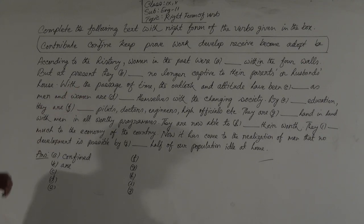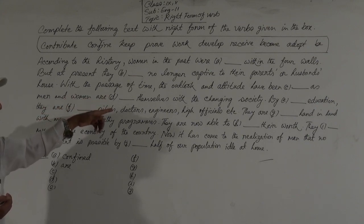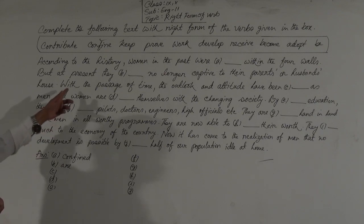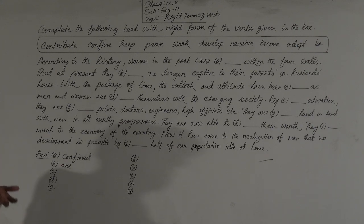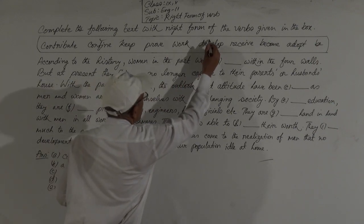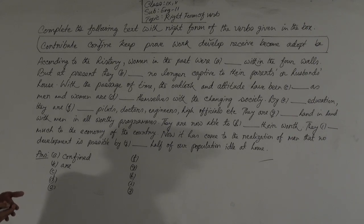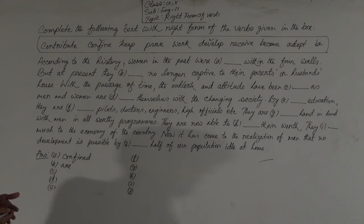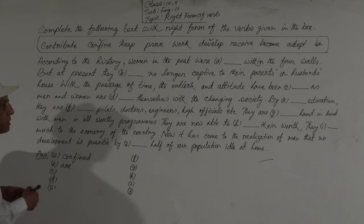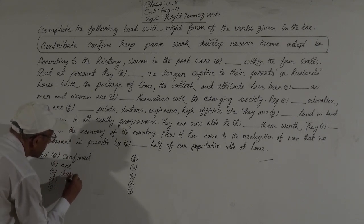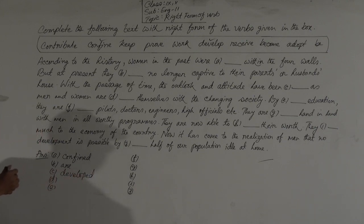With the passage of time, the outlook and attitude have been dashed as men and women are dashed themselves with the changing society. After 'have been,' the verb must be in past participle form. There is a verb 'develop' in the box, so 'develop' will become 'developed.' Gap C will be developed — you add '-ed.'